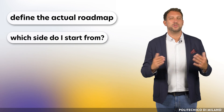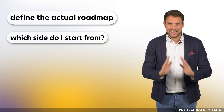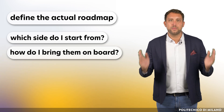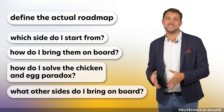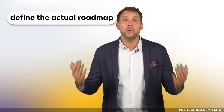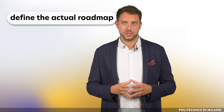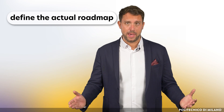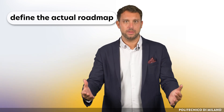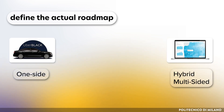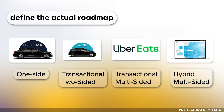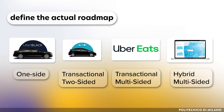The last step is to define the actual roadmap. Which side do I start from? How do I bring them on board? How do I solve the chicken and egg paradox? And then what other sides do I bring on board? A help to answer all of these questions is hidden in the clips of this course, but it's important to have a reference map of how we believe our platform can take shape. Trivially, Uber could never have started by creating Uber Movement, but we can design a system where the equivalent of Uber Movement will be there and do everything we can to make it a reality as soon as possible.